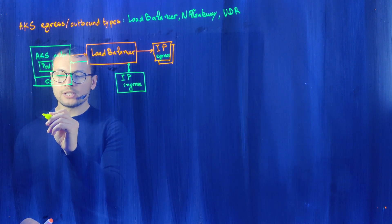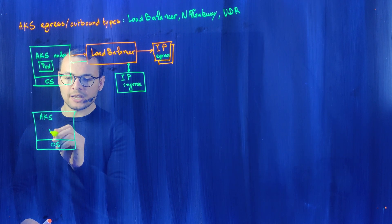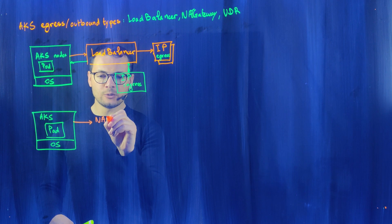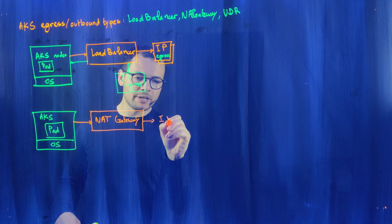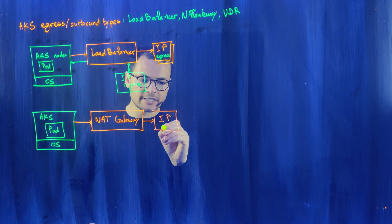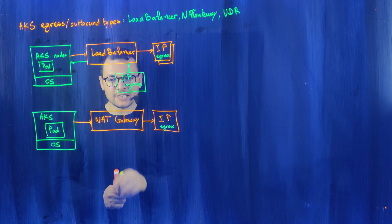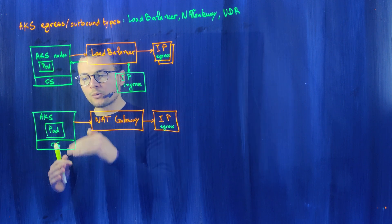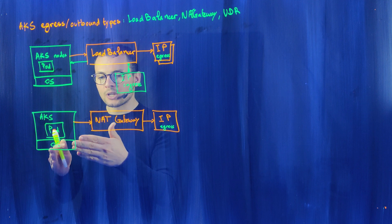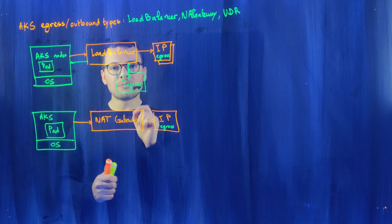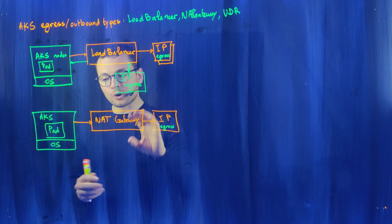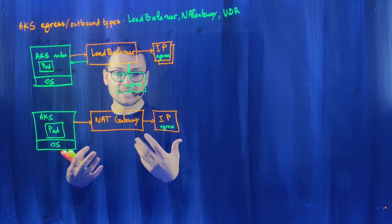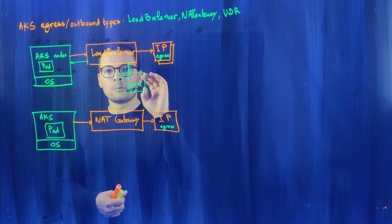With the NAT gateway mode, we still have our AKS nodes with an OS and pods, but the load balancer is replaced by an Azure NAT gateway. Egress traffic now flows through the NAT gateway, which has its own public IP addresses. The key difference is that SNAT ports are no longer pre-allocated per node — instead, all SNAT ports are shared across all nodes. One node might use a single port while another uses the rest, greatly reducing SNAT port exhaustion.